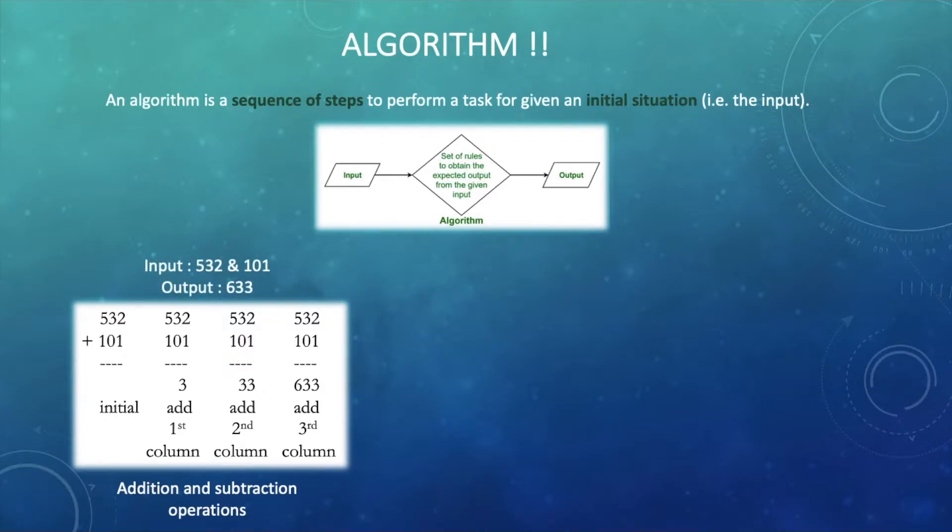If you've seen this image these mathematical operations have the initial input. Like here we have two numbers 532 and 101 and then we have few predefined steps like how to carry or borrow while performing the addition or subtraction operation. And after following those steps we get the desired output as the summation of these two numbers.